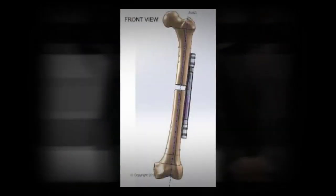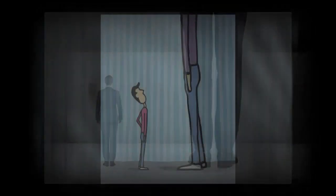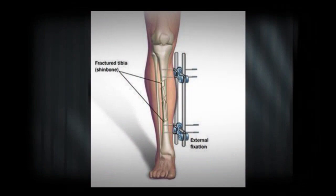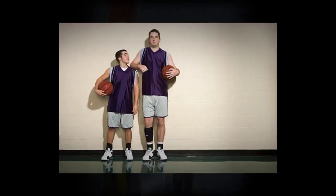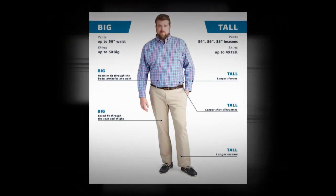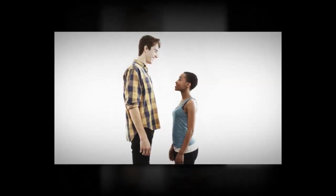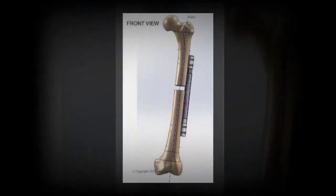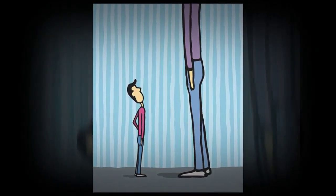Officially called distraction osteogenesis, the leg extension surgery involves cutting either the femur, tibia, or both, and using metal braces to extend the bones over time. New bone cells will grow, effectively making each leg up to three inches longer. For nearly a century, doctors have used it to help patients with congenital defects or after traumatic injuries, but now it's become the latest trend in extreme cosmetic surgery.